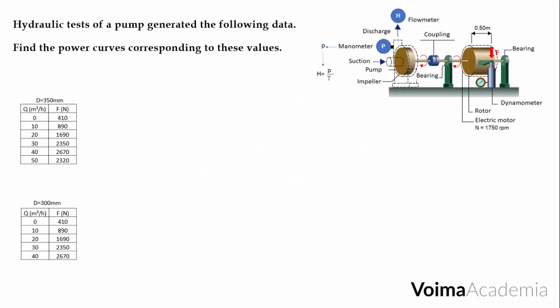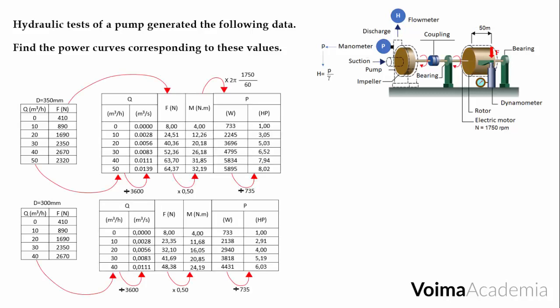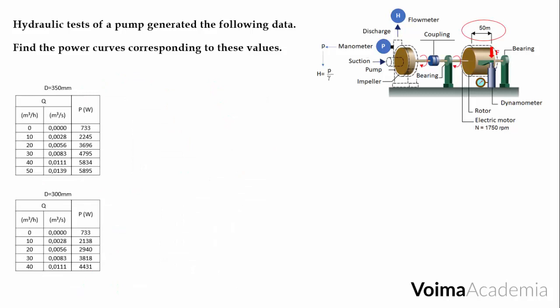Let's run an example. Hydraulic tests of a pump generated the following data. Find the power curves corresponding to these values. Here are the transformations and calculations that we must do to find the brake horsepower for each flow and impeller. They are detailed in the video concerning how to find the power curves. Here are the flows and powers.